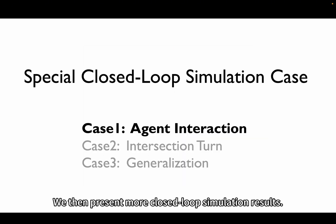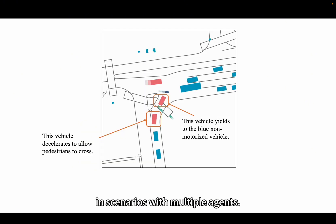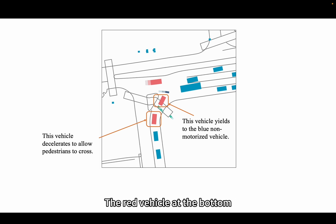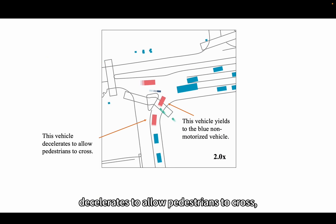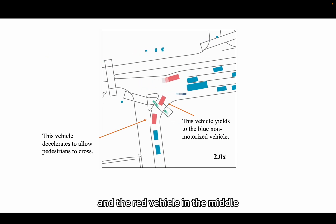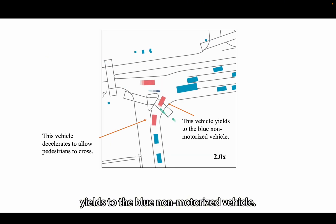We then present more closed-loop simulation results. Our model performs excellently in scenarios with multiple agents. This case demonstrates that Keygrass effectively captures future interactions between agents. The red vehicle at the bottom decelerates to allow pedestrians to cross, and the red vehicle in the middle yields to the blue non-motorized vehicle.